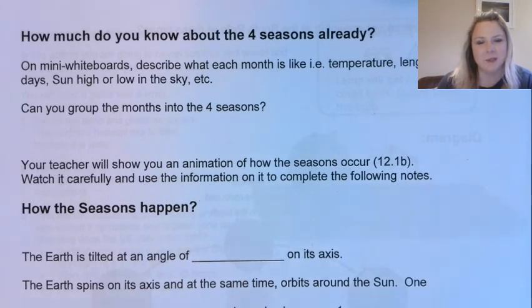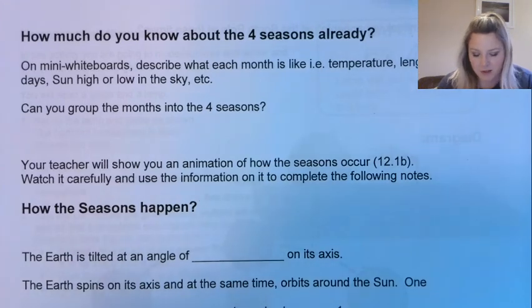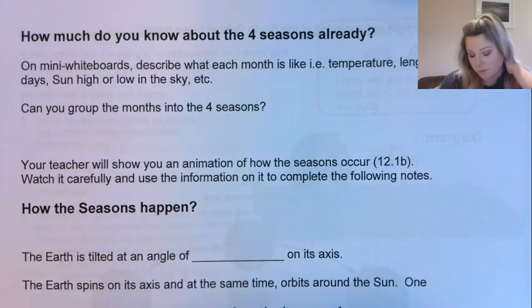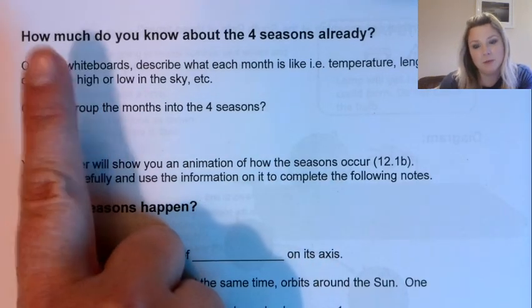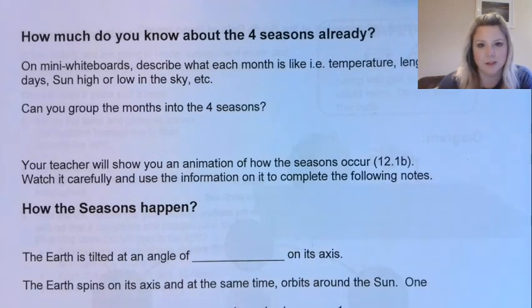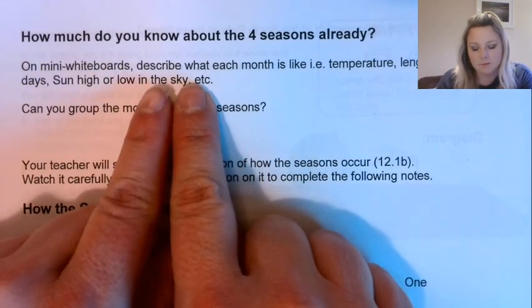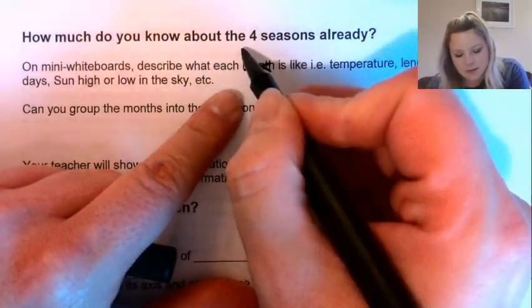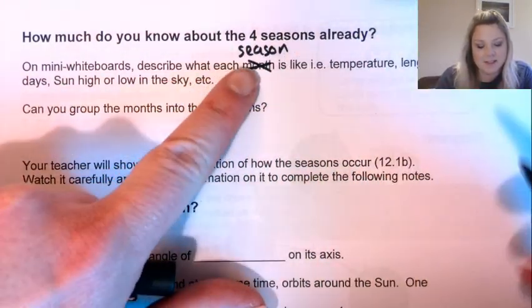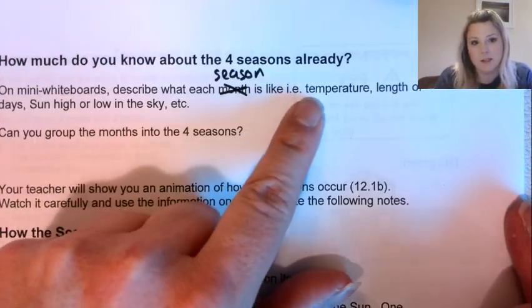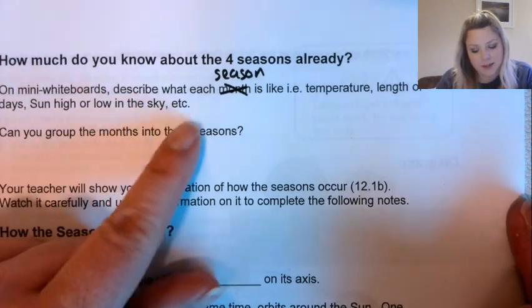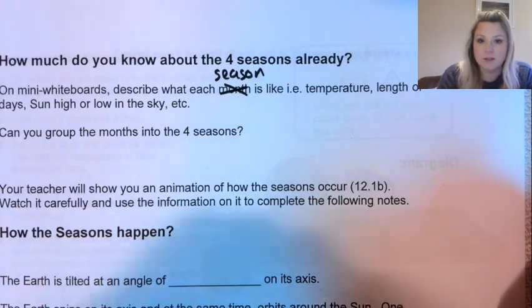Hopefully you came up with some interesting things — I always really like hearing what everyone says because people think about things I wouldn't ever think about. Over on page 135 there's another activity. Normally we would do this on mini whiteboards, but I'm going to ask you to do it on a piece of paper. Split it into four sections, think about the four different seasons — summer, autumn, winter, spring — and in words describe what each season is like: the temperature, the day length, whether the sun is high or low in the sky, and lots of other things. Pause now and do that.